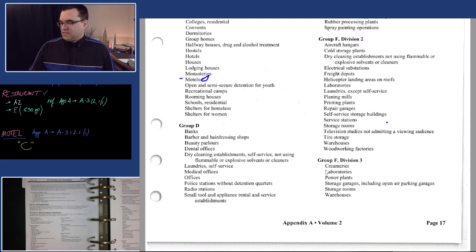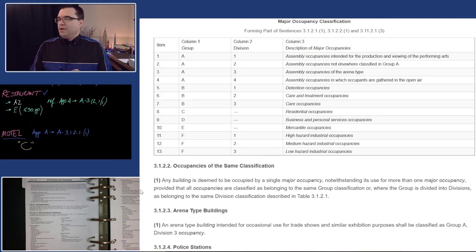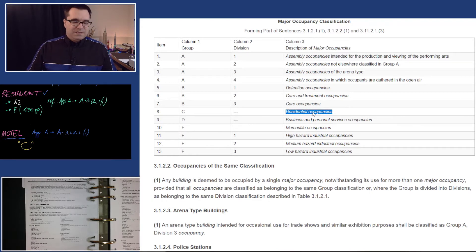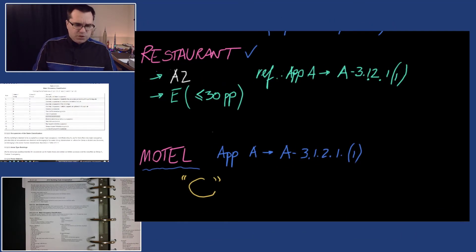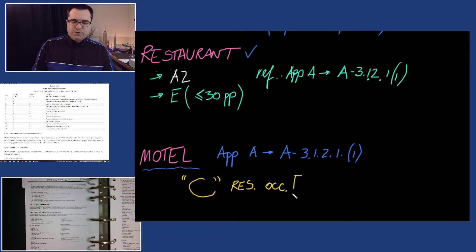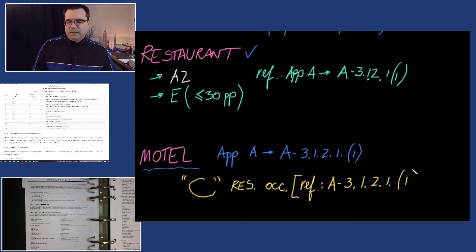If we want to be reminded what C is, I'll bring up Table 3.1.2.1 — it tells us that C is for residential occupancies. So C equals residential occupancies. I'm going to be thorough and add that reference, including Table 3.1.2.1, right here.